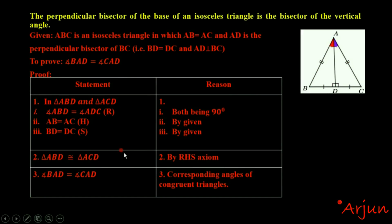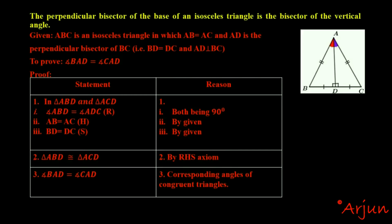So if these two triangles are congruent, then the opposite angle of BD side and the opposite angle of CD side — angle BAD and angle CAD — are corresponding angles of congruent triangles, and hence they are equal. So angle BAD is equals to angle CAD. The reason is corresponding angles of congruent triangles. So AD is the angle bisector. Thank you for watching.